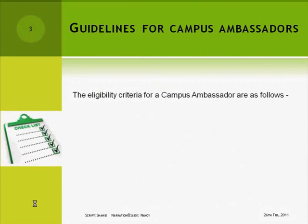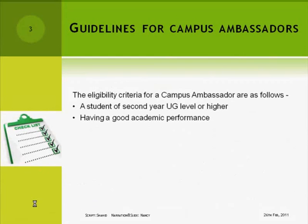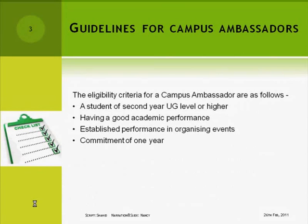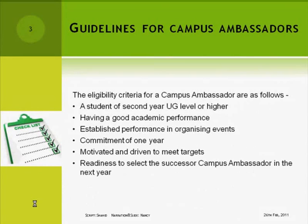The eligibility criteria for a Campus Ambassador are as follows: a student of second year UG level or higher, having good academic performance, established performance in organizing events, commitment of one year, motivated and driven to meet targets, and readiness to select the successor Campus Ambassador in the next year.